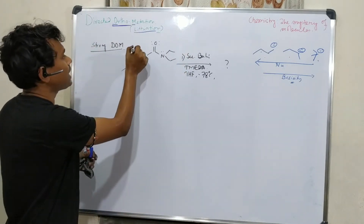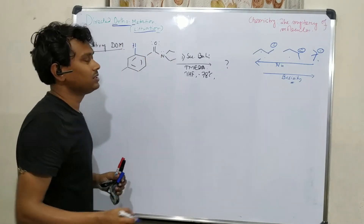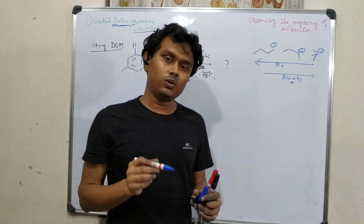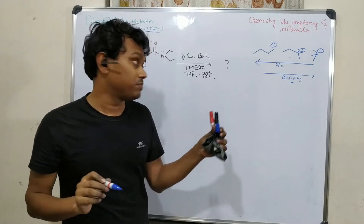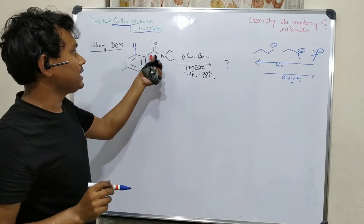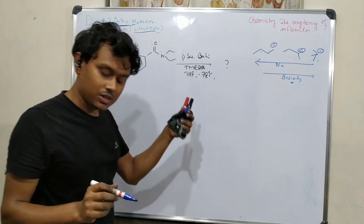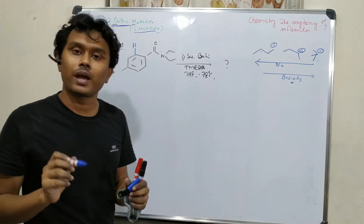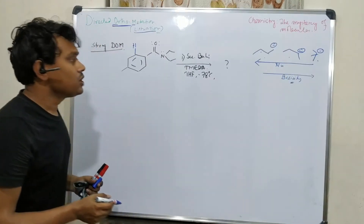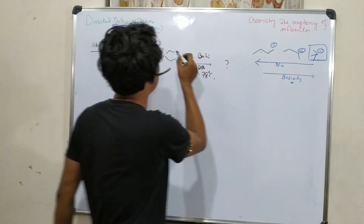In directed ortho-lithiation, if there is a carbonyl group, these aryllithiums are good nucleophiles, so a competition may happen and result in a mixture of products. That's why it is better to use something a little bulky. But if we use something too bulky, like the tertiary one, due to its bulkness, it may not be able to abstract the desired proton.